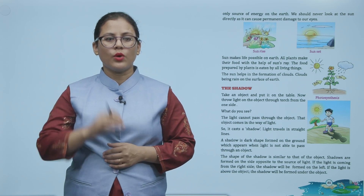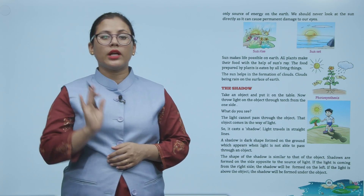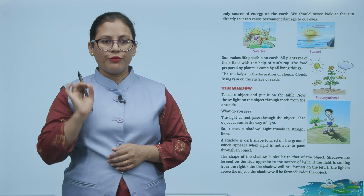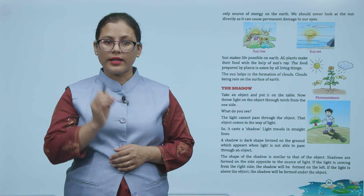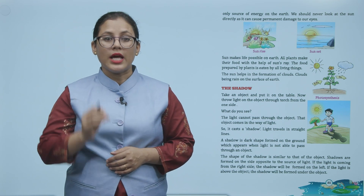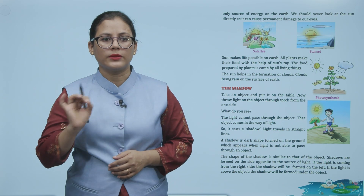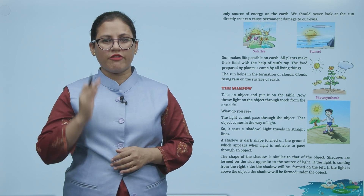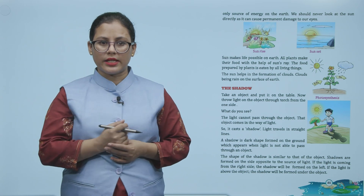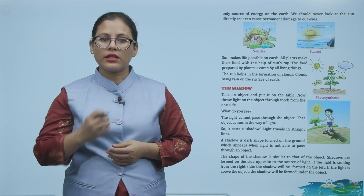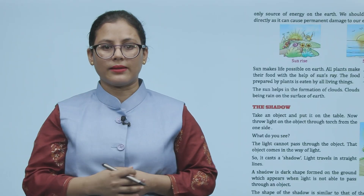Sun makes life possible on earth. All plants make their food with the help of sun's rays. The food prepared by plants is eaten by all living things. The sun helps in the formation of clouds. Clouds bring rain on the surface of earth. Sun ki wajah se hi life possible hai earth pe. Plants apna khana prepare karte hai with the help of sunlight. Sun cloud ki formation mein bhi help karta hai aur clouds barish lekar aate hai.